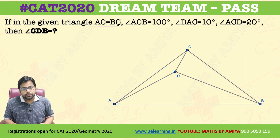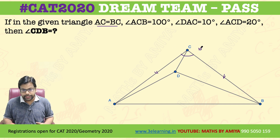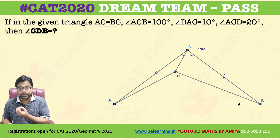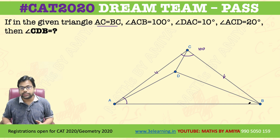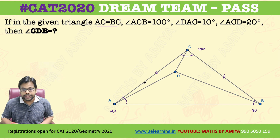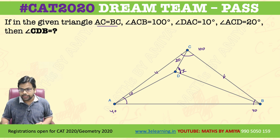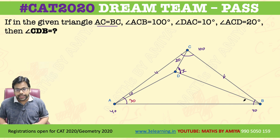In this question, AC equals BC, so we have an isosceles triangle. Angle ACB is 100 degrees — that is given. Since it's an isosceles triangle, angles A and B must sum to 80 degrees, and since they are equal, each is 40 degrees. DAC is 10 degrees given, ACD is 20 degrees given, and we need to find angle CDB, which we call X. So if one part of angle A is 10 degrees, the other part must be 30 degrees. Assume the unknown angle is theta, making the adjacent part 40 minus theta. If one part of angle C is 20 degrees, the remaining part is 80 degrees.